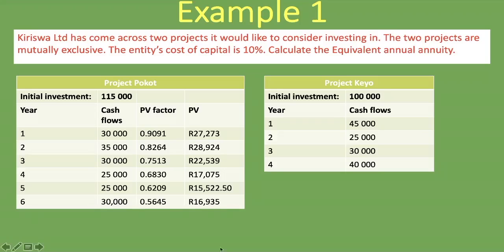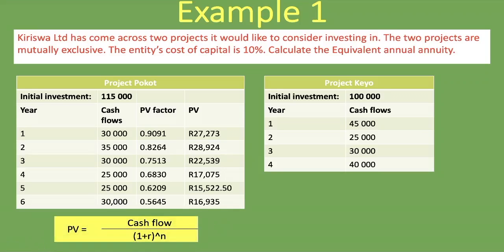If you want to calculate present values without a table, here is the formula: take the cash flow for the specific year and divide it by (1 plus the interest rate) raised to the power of N, where N is that specific year. For example, the year two cash flow of 35,000 Rand divided by (1 plus 10%) to the power of two gives 28,924 Rand.